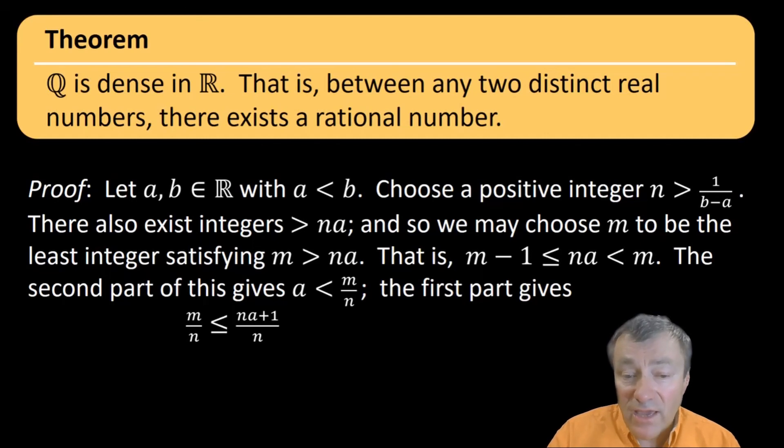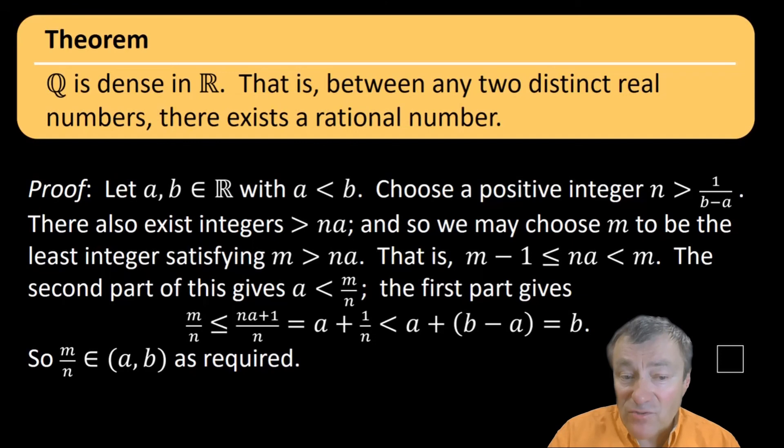And the previous inequality to that could be rewritten as m over n is less than or equal to n a plus one over n, which is equal to a plus one over n, which is less than a plus b minus a, which by the way equals b. So now I have both inequalities that I need, which shows that the fraction m over n is in the open interval (a, b), which is exactly what we set out to prove.